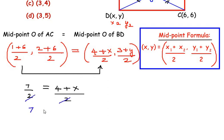You can see on both the sides we have the same denominator so we can just cancel them off. So we are left with 7 = 4 + x and isolating the x, that is taking 4 on the other side of equal to sign, we get x = 7 - 4 which is equal to 3. So we got the x coordinate.